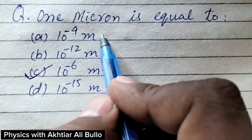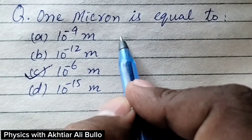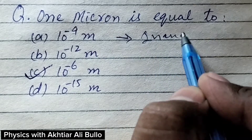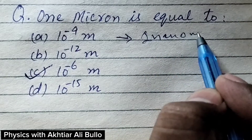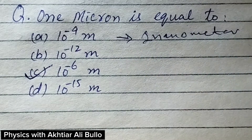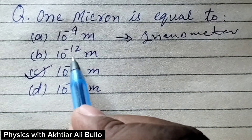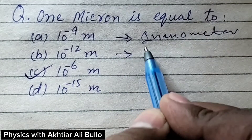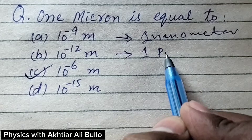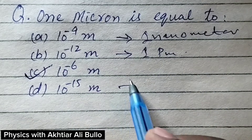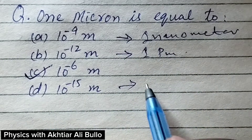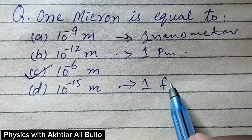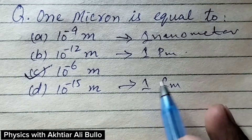10 raised to the power minus 9 meter is equal to 1 nanometer. Hence, 10 raised to the power minus 12 is equal to 1 picometer, and 10 raised to the power minus 15 is equal to 1 femtometer.